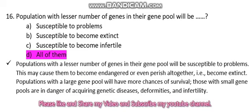A population with a large gene pool will have more chances of survival. Those with a small gene pool are in danger of occurring genetic diseases, deformities, and infertility. یہ سب مثال ان کو ہو سکتی ہیں — وہ extinct بھی ہو سکتی ہیں، infertile بھی ہو سکتی ہیں، اور مختلف قسم کے دوسرے پرابلمز کا شکار بھی۔